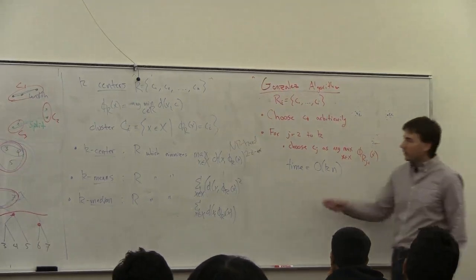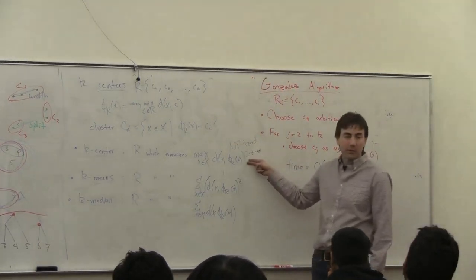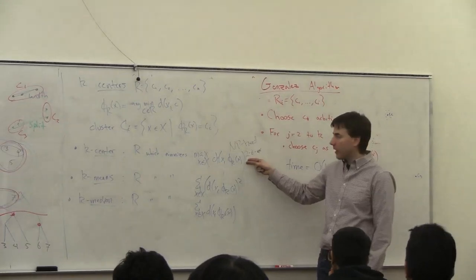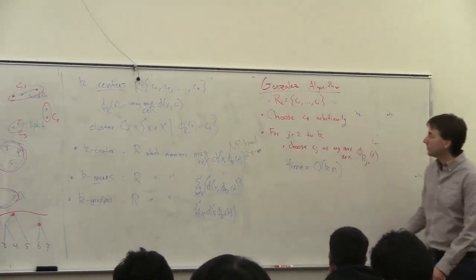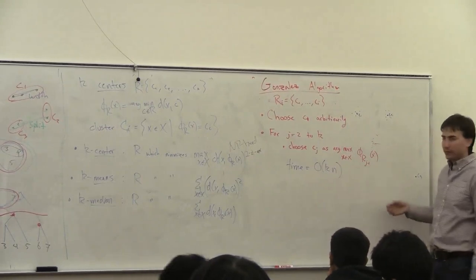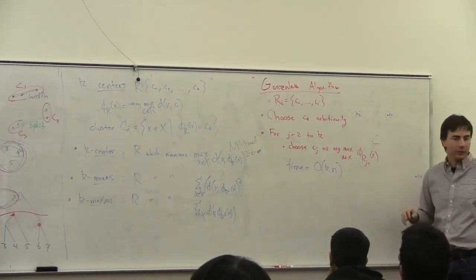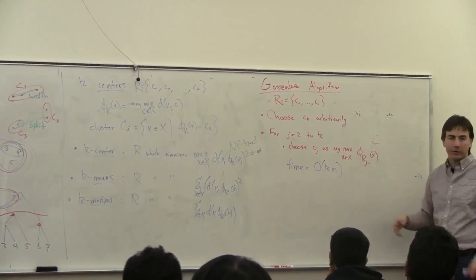And it's a two approximation to this problem, which is the best you could possibly do. So it's a two approximation to the k-center clustering problem, and it's very easy to write the code.